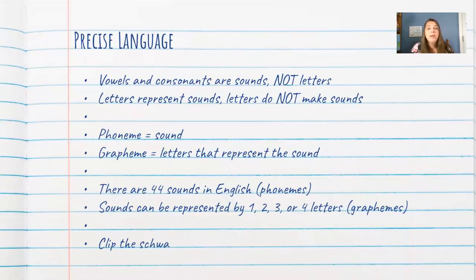All right, so first it's important that we agree on some language here. It's important that we are using correct language to explain what we mean and that we are all having the same understanding of the vocabulary we use. So first and foremost, vowels and consonants are sounds. They're not letters. Letters represent those sounds. Letters do not make the sound. So when we talk to students about this sound, we can say this sound, which is represented by these letters. We don't say, here's the letter T, and it makes the sound T. That's not as accurate.